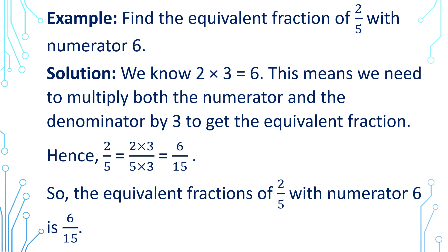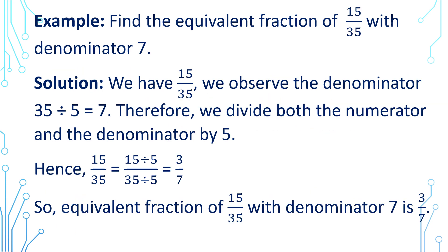Find the equivalent fraction of 2 by 5 with numerator 6. We know that 2 multiplied by 3 equals 6, which means we need to multiply both the numerator and the denominator by 3 to get the equivalent fraction. Hence, 2 by 5 multiplied by 3 gives us 6 by 15. So the equivalent fraction of 2 by 5 with numerator 6 is 6 by 15.